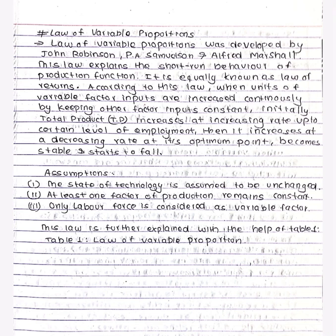The law of variable proportion was developed by John Robinson, P.S. Samuelson, and Alfred Marshall. This law explains the short run behavior of the production function. It is equally known as the law of returns. According to this law, when units of variable factor inputs are increased continuously by keeping other factor inputs constant, initially total product increases at an increasing rate up to a certain level of employment, then it increases at a decreasing rate, and at its optimum point it becomes stable and starts to fall.